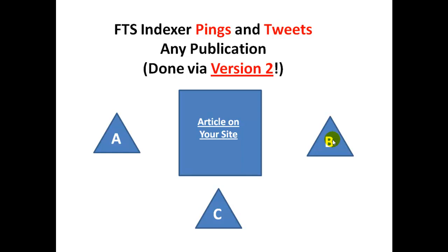These users can have lots of reciprocal indexing friends or buddies. Behind user A can stand 2, 3, 5, or 10 other users who are helping user A to speed up the indexing of his or her publications. The same story with user B, with user C. When you sum up the viral power, you will see that version 2 and FTS Indexer are helping to improve your reputation to such an extent where it really makes sense to add your site into Free Traffic System version 2, just because of FTS Indexer and these people and their reciprocal indexing friends working all together. This is really great for the site owner inside Free Traffic System.